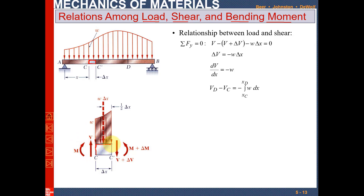This section is shown here as a rectangular portion. Point C is at a distance x, and the thickness of this section is delta x — a very small section. So the total length from this point to this point will be x plus delta x. This delta x is very very small, so it is actually a thin section.